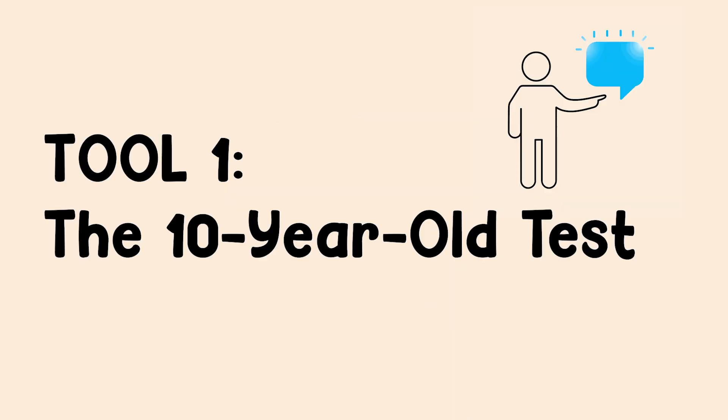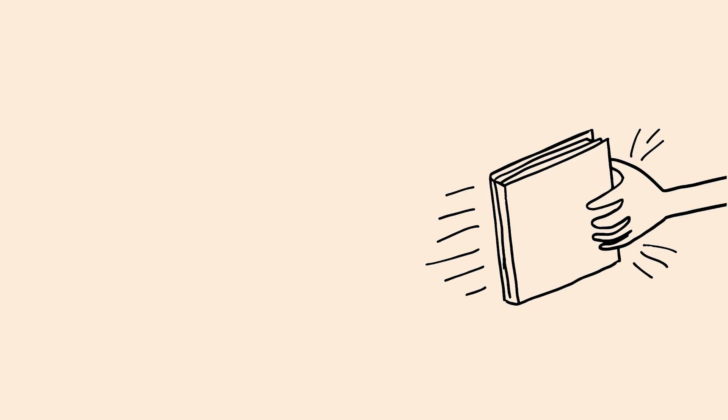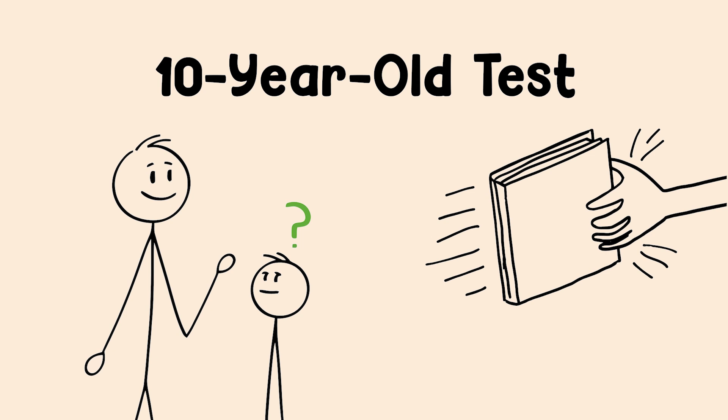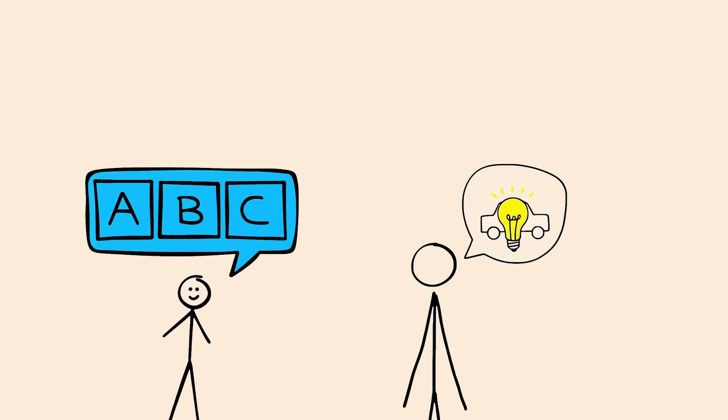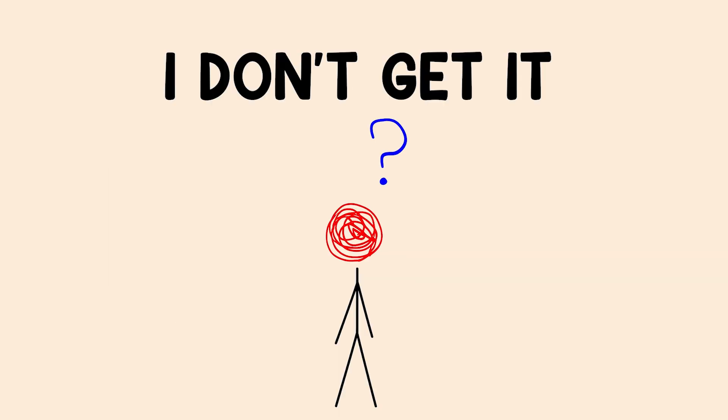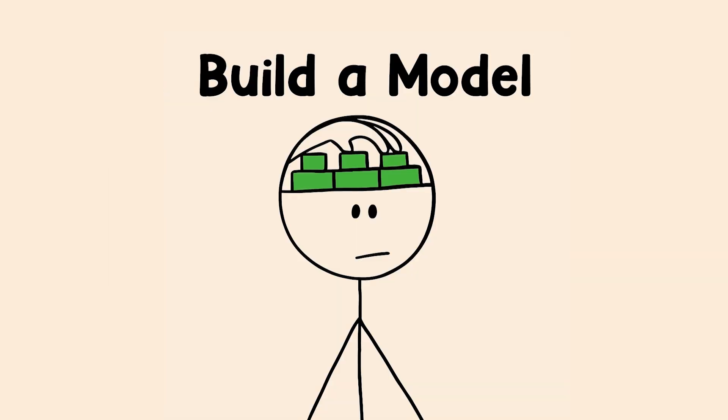I've got three for you. First is self-explanation, or what I call the 10-year-old test. After you learn something, close the book and ask yourself, 'how would I explain this to a 10-year-old?' Using simple words, using an analogy. If you can't simplify it, you don't really get it yet. This forces you to move beyond just recognizing words and actually build a mental model.